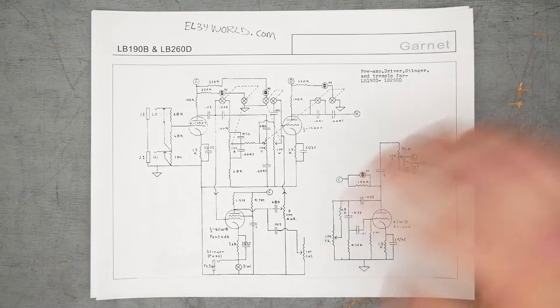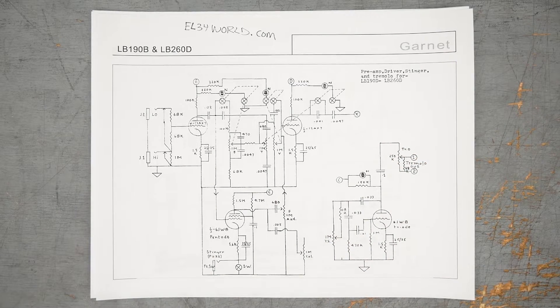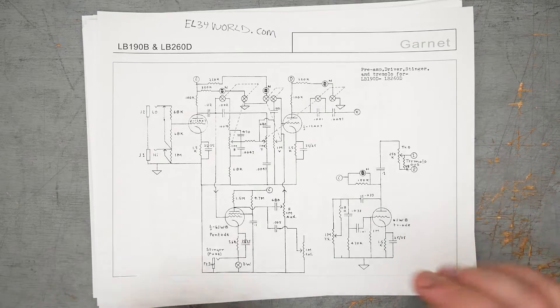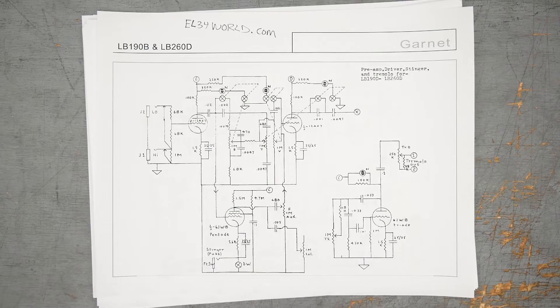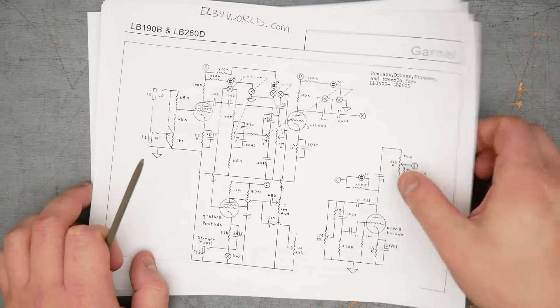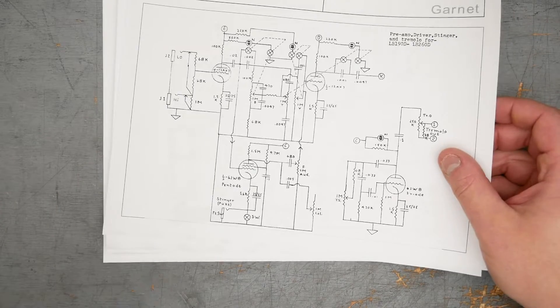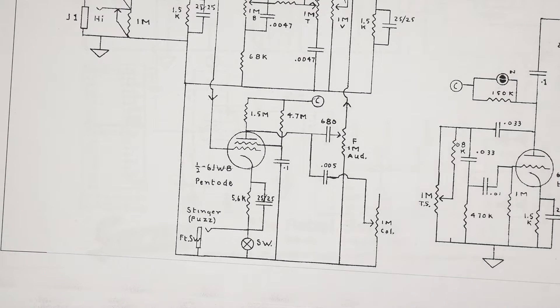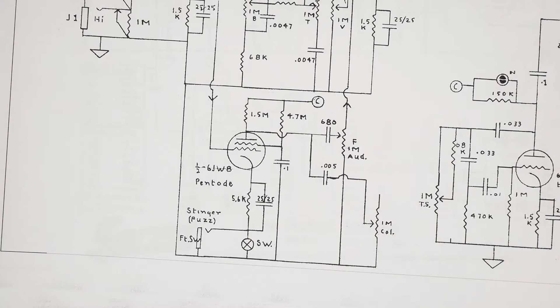Garnet amps had a whole bunch of interesting designs and I came across a couple different amps that had a built-in fuzz circuit they called the Stinger. There's essentially two designs: there's an early design that is not what's shown here on this schematic. I'm going to zoom in, we're going to talk about this first, and then we'll look at the one I'm actually going to try and build.